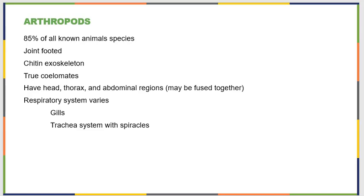Arthropods make up 85% of all known animal species. The name literally means joint foot. They all have jointed appendages — knees and elbows, essentially — exoskeletons made of chitin, and they're true coelomates. They all have heads, a thorax, and an abdominal region, which are sometimes fused together. Their respiratory systems are quite variable: some have gills, and some have tracheal systems with spiracles. The spiracle is an opening on the outside of the body in the exoskeleton, and the tracheae are little tubes leading to different parts of the body, functioning by diffusion rather than pumping.